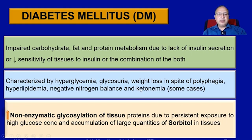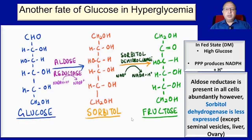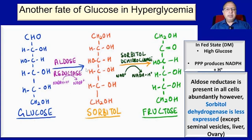The pathophysiology is driven by non-enzymatic glycosylation of tissue proteins occurring due to persistent exposure of the body to higher glucose concentration, and by accumulation of large quantities of sorbitol in tissues. When blood glucose is high, the pentose phosphate pathway produces excess NADPH. Glucose is then acted upon by aldose reductase enzyme, especially in insulin-independent organs.